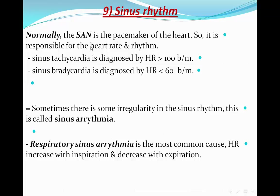Normally, the SA node is the pacemaker of the heart, responsible for the heart rate and the rhythm. Sinus tachycardia is diagnosed by heart rate more than 100 beats per minute, and sinus bradycardia is diagnosed by heart rate of less than 60 beats per minute. Sometimes there is some irregularity in the sinus rhythm — this is called sinus arrhythmia. Respiratory sinus arrhythmia is the most common cause; the heart rate will increase with inspiration and decrease with expiration.